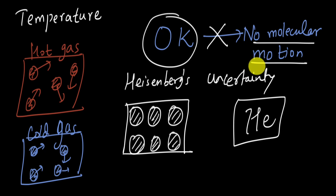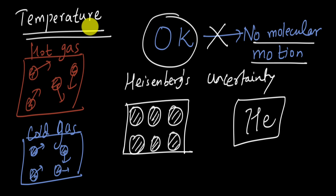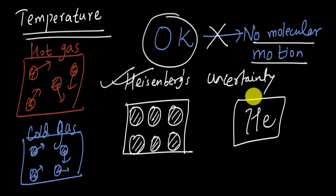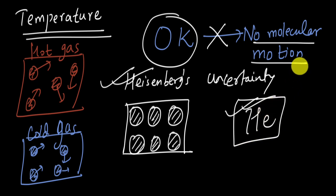So to sum up: in this video, we saw that even though we talk about temperature as being related to the average kinetic energy of molecules, this notion of temperature breaks down when we are at very low temperatures. At low temperatures, quantum mechanical effects come into play, and these effects ensure that there is some energy even at 0 Kelvin. This is substantiated by Heisenberg's uncertainty principle and the fact that helium is a liquid at 0 Kelvin — since it is a liquid, it has to have some molecular motion. Now you know what happens at 0 Kelvin!